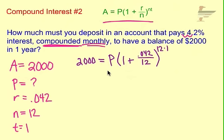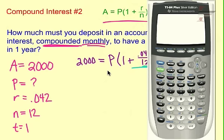So in simplifying this, we just want to go inside the parentheses, let's do this fraction first. So we get 0.042 divided by 12, and we get 0.0035.